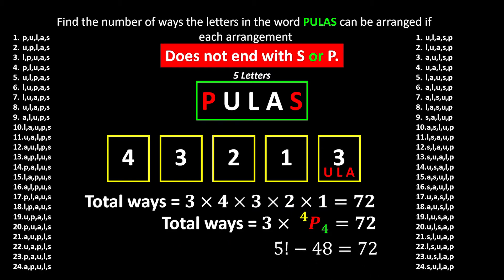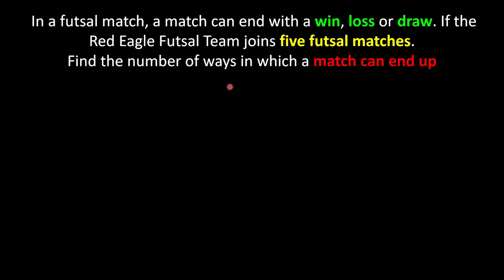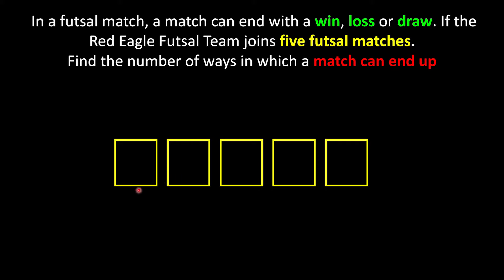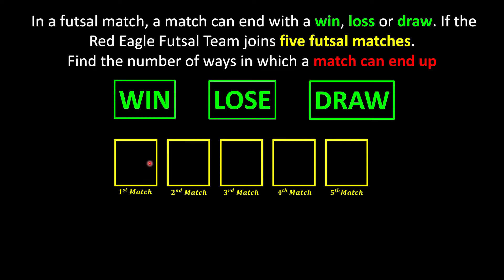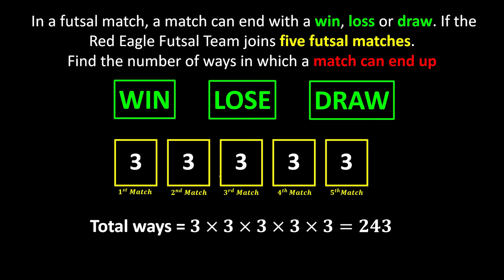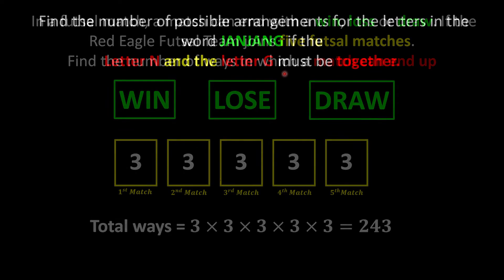In a futsal match, a match can end with a win, loss, or draw. The Red Eagle futsal team is going to play 5 futsal matches, and we want to find how many ways they can end the matches. We use 5 slots to represent each match, and each match can end with win, loss, or draw — so 3 ways per match. Since each match continues after one another, we use the multiplication rule: 3 to the power of 5 gives us 243 ways.